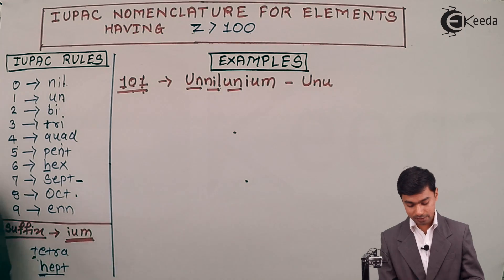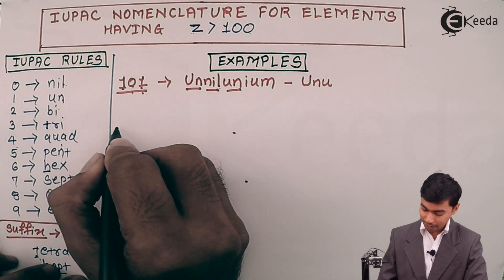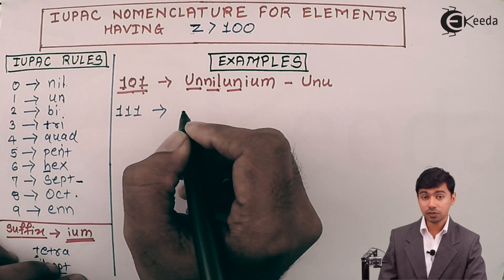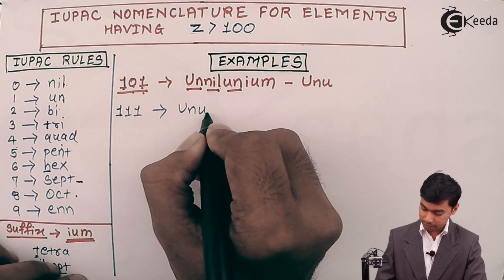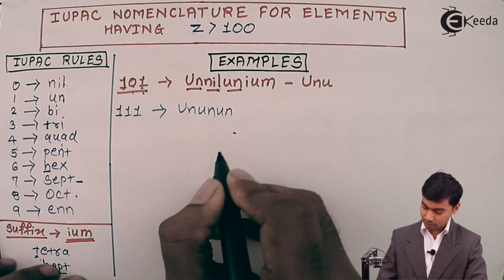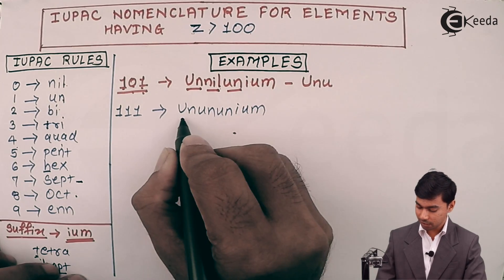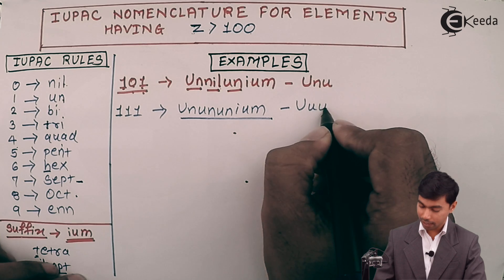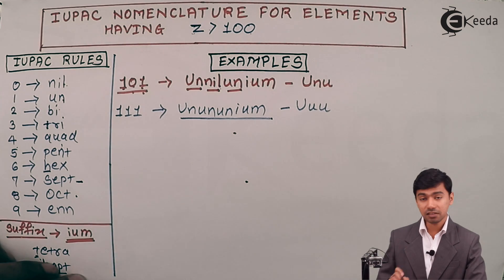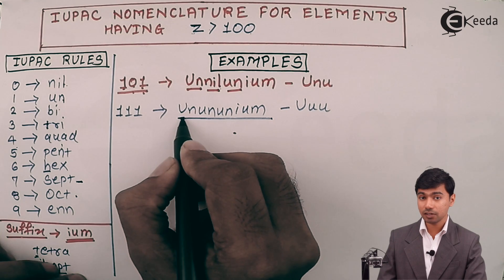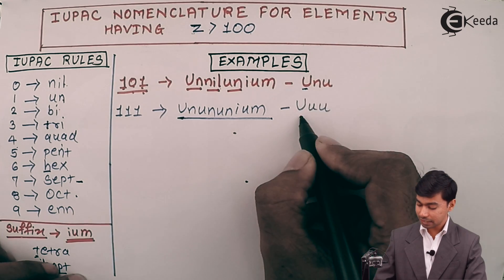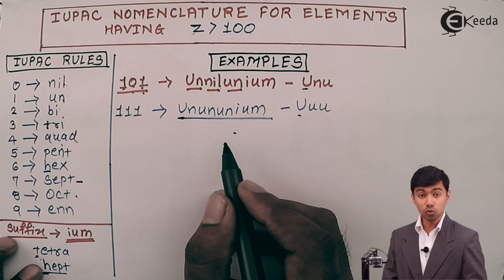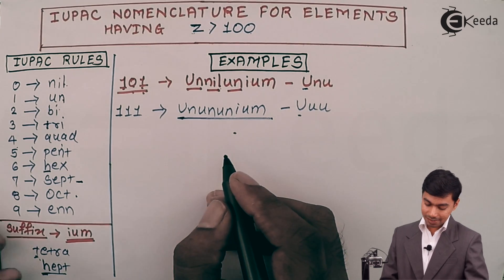As another example, consider an element with atomic number 111. Each digit is 1, 1, 1 — so: un + un + un + ium = 'Unununium'. The symbol is U, U, U — that is 'Uuu'. Remember, the first letter in the name as well as in the symbol must be capital, and the remaining letters are in small.